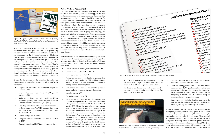Airplane Flight Manuals (AFM) and the Pilot Operating Handbook (POH) for each individual aircraft explain the required items for inspection. A review determines if the required maintenance and inspections have been performed on the airplane. Any discrepancies must be addressed prior to flight. Once the pilot has determined that the airplane's logbooks provide factual assurance that the aircraft meets its airworthy requirements, it is appropriate to visually inspect the airplane.